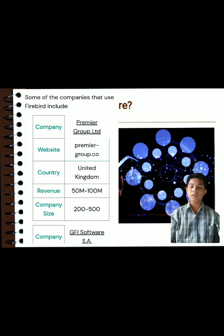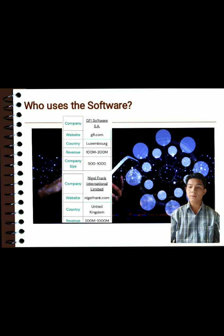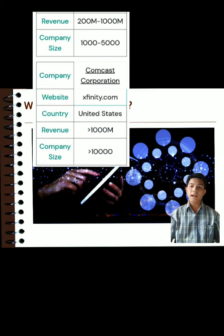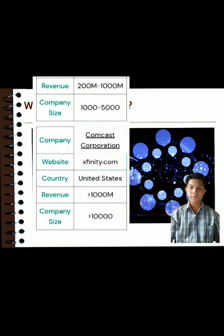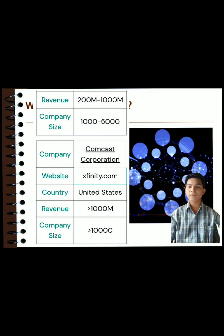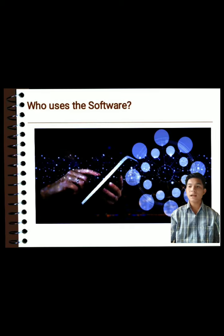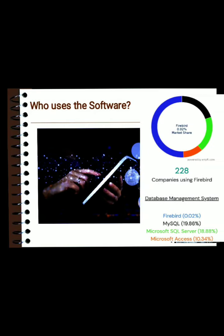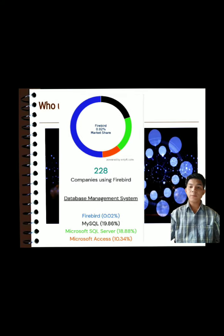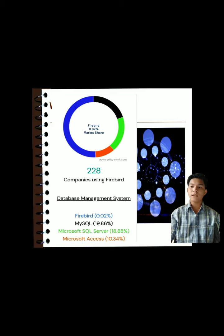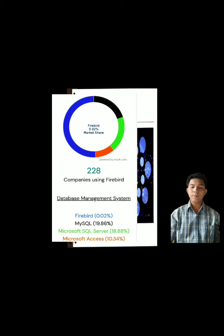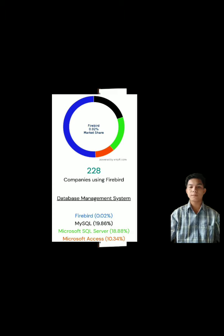Anyone can build a custom version of Firebird as long as the modifications are made available under the same IDPL licensing for others to use and build on. It is free — no fees for download, registration, licensing, or deployment, even if you distribute Firebird as part of your commercial software package. Firebird development depends on voluntary funding, with options ranging from donations through Firebird Foundation membership to sponsorships and commitments.